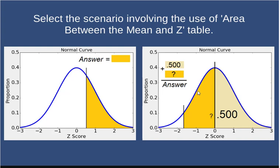So anytime more than half the distribution is involved, use 0.5 plus the area between the mean and z. If the distribution is less than half, then use the area beyond z to solve the problem.